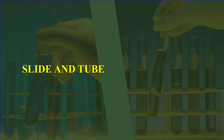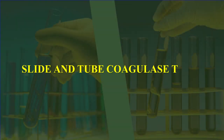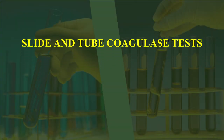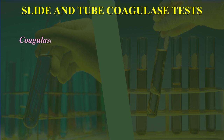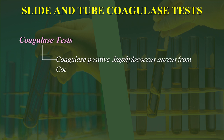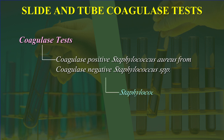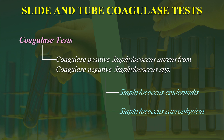Slide and tube coagulase tests. Coagulase tests are used to differentiate coagulase positive Staphylococcus aureus from coagulase negative Staphylococcus species like Staphylococcus epidermidis, Staphylococcus saprophyticus, etc.